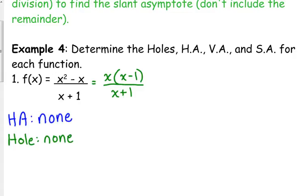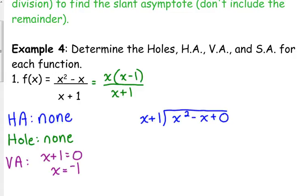Do we have a vertical asymptote? Yes, we do. Set the denominator equal to 0 and solve. So we have a vertical asymptote at x equals negative 1. And now we need to figure out what the slant asymptote is. So we divide the numerator by the denominator. So x squared minus x. Stick a plus 0 on the end there. You're missing a constant.